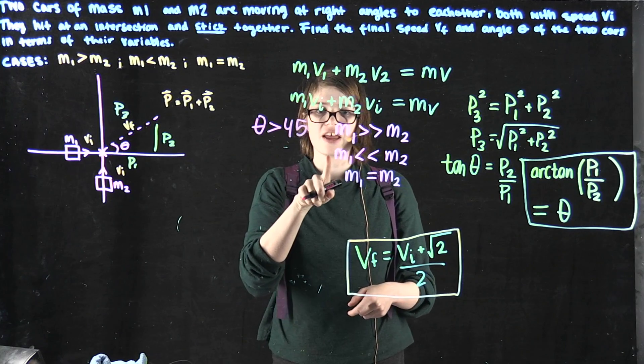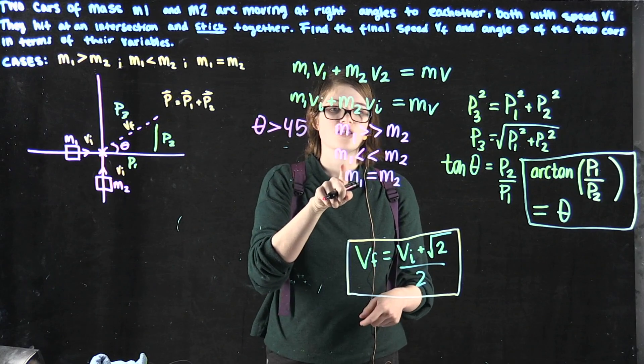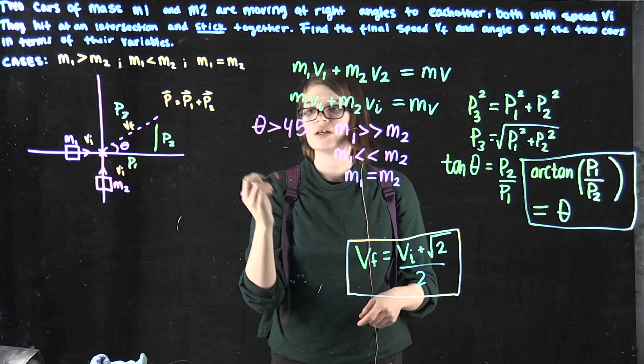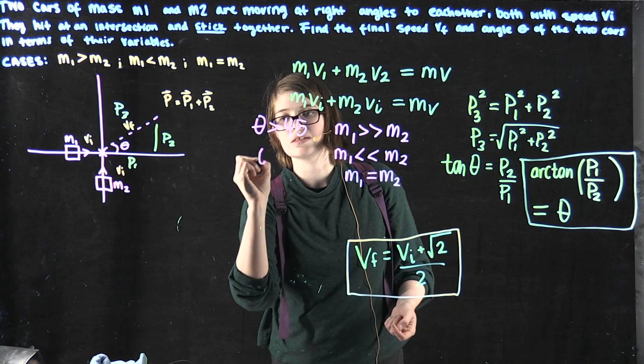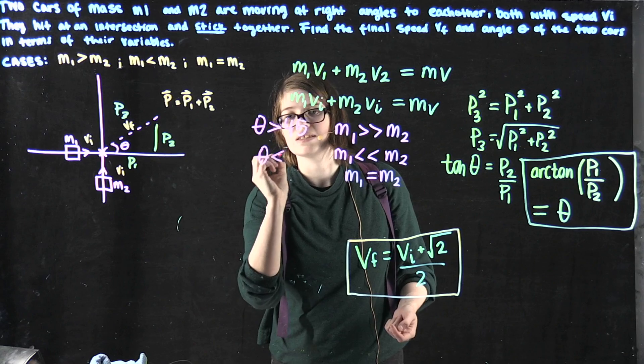This is vice versa for the next case, where we have a smaller number over a larger number. Because it's less than 1, we can assume that theta is less than 45.